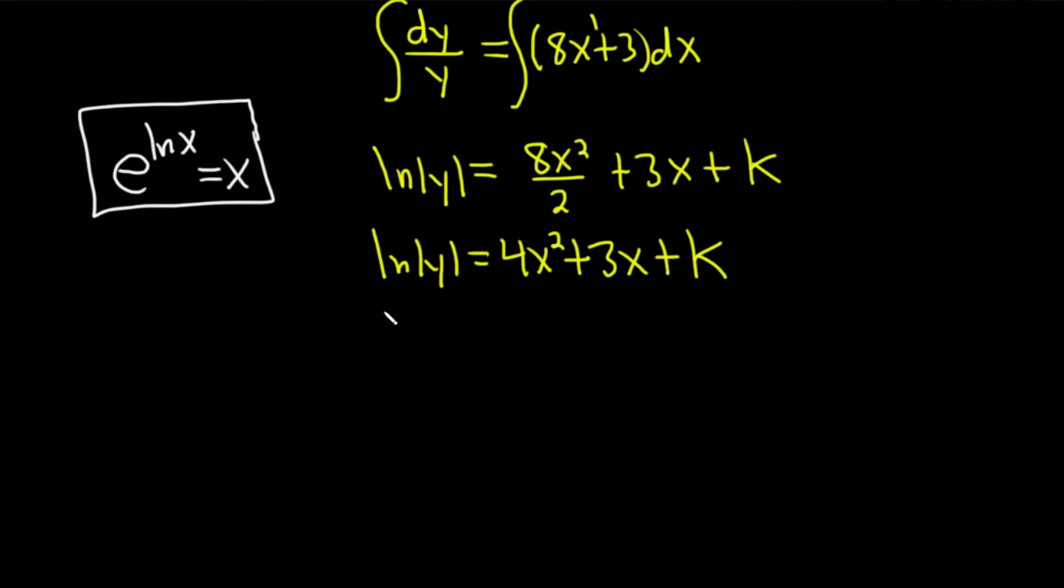So we need to get rid of the ln. So I'm going to put an e here on the left. I'm going to put an e here on the right. This process is called exponentiation. We are exponentiating both sides. Notice how I put the right-hand side in parentheses. That whole thing in parentheses, 4x squared plus 3x plus k, that's the exponent. On the left-hand side, these go away. They cancel. We get the absolute value of y equals e to the 4x squared plus 3x plus k.